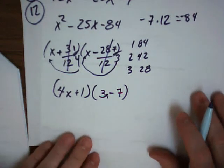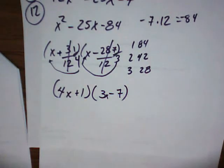4x plus 1 and 3x minus 7. That's the AC method.